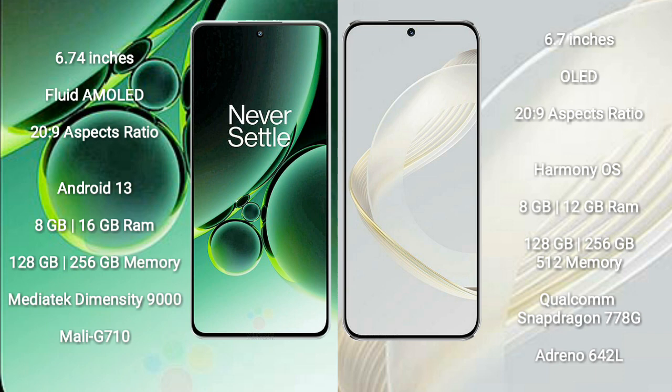The OnePlus Nord 3 comes with 8GB or 16GB RAM, and 128GB or 256GB internal storage, powered by the MediaTek Dimensity 9000 processor with Mali-G710 GPU. The Huawei Nova 11 comes with 8GB RAM and 128GB, 256GB, or 512GB internal storage, powered by the Qualcomm Snapdragon 778G processor with Adreno 642L GPU.